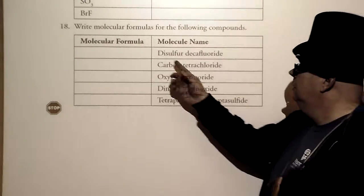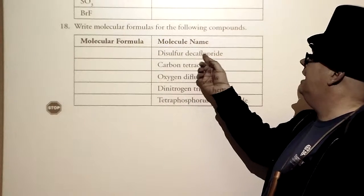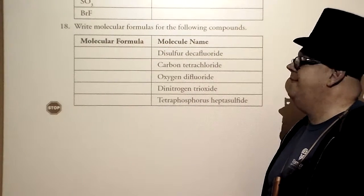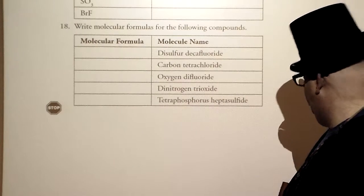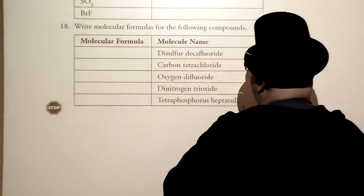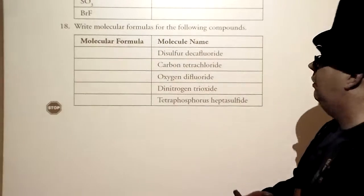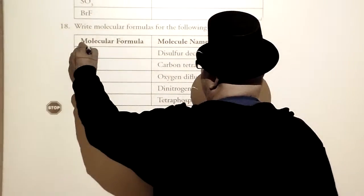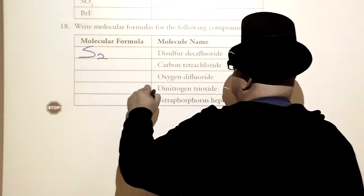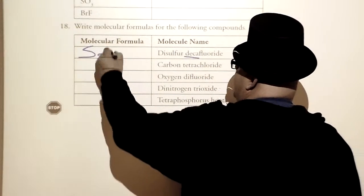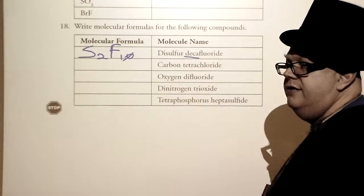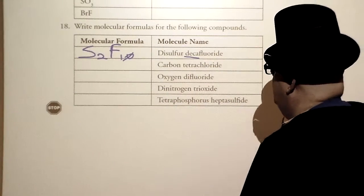Here's one. Disulfur decafluoride. Now, they gave us a molecule name. They want the molecular formula for it. Well, they already tell me I've got a sulfur and I've got fluorides running loose. Disulfur. So that's going to be two S's. Deca meaning 10. So S2F10.